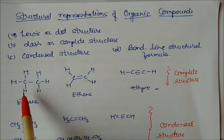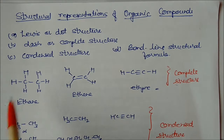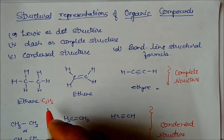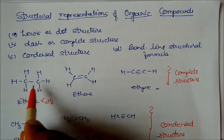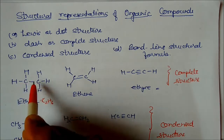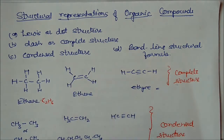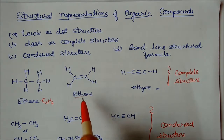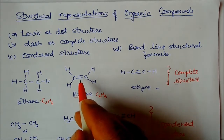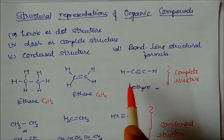In dash or complete structures, every bond and every atom is shown with the bond. For example, the ethane molecule with formula C2H6 has two carbons and six hydrogens. Each carbon is separated by one single bond, and between each hydrogen and carbon there is also one single bond. Similarly, for ethene with formula C2H4, there is a double bond between the two carbons. These are called complete structures.